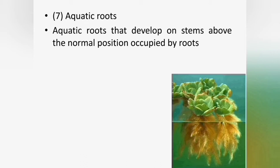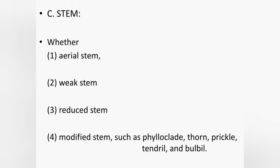Here it is over for terminologies based on roots. Now we start the terminologies based on stem. The stem is the ascending organ of the plant, developed from the plumule. According to stem types, there are several types: aerial stem, weak stem, reduced stem, and modified stems such as phylloclade, cladode, thorns, prickles, tendrils and bulbils.